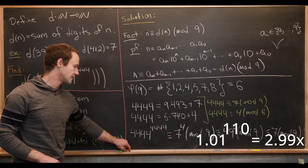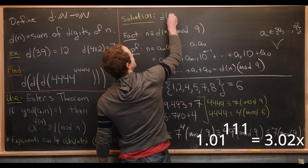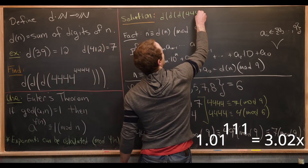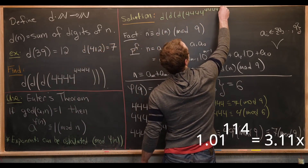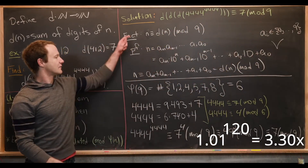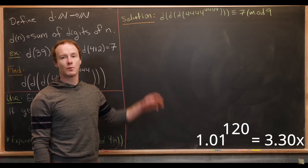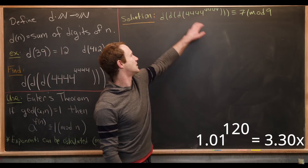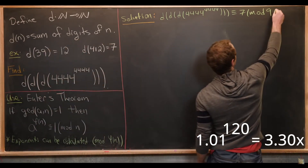Using our fact that n is congruent to d(n) mod 9, we have that d of d of d of 4,444 to the 4,444 is also congruent to 7 mod 9. Now we move on to the next step: we'll use a trick involving logarithms to get a bound on the size of our number.